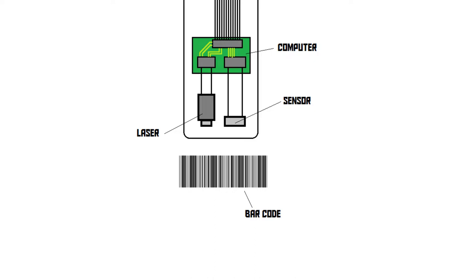And when the laser hits a white space, a lot of light is reflected back. That way, as the laser moves across the barcode, the intensity of the light reflected onto the sensor changes. A built-in computer inside the barcode scanner is then able to take these patterns of lines and translate them into the right digits and characters.